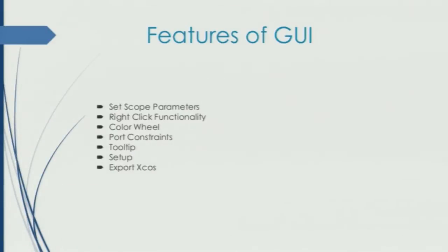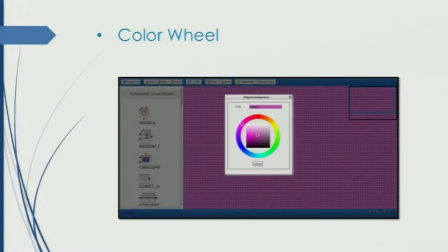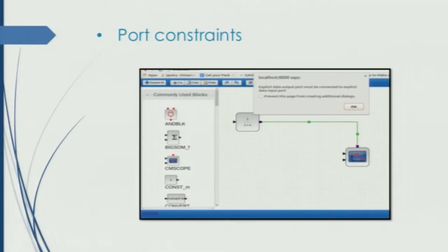These are the features of the GUI. We can set block parameters — for every block there are certain parameters which can be set. There is right-click functionality for zoom in, zoom out, etc. There is also a color wheel and port constraints. For example, an explicit output port can only be connected to an explicit input port, and a command port can only be connected to a control port. If connected otherwise, it will show an error. If we choose a color it will display in the background. As you can see, when we tried to connect an explicit output port with a control port, it shows an error that it cannot be connected.